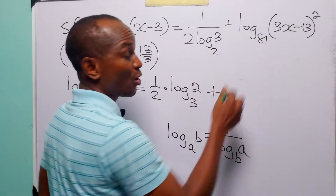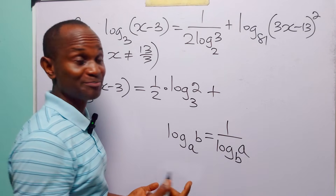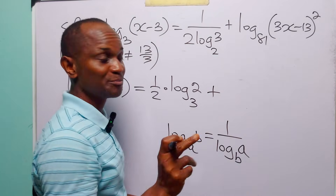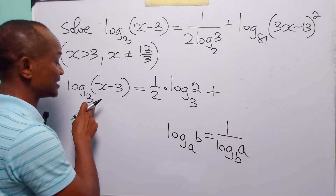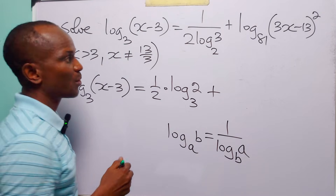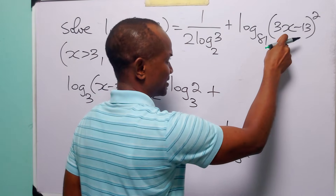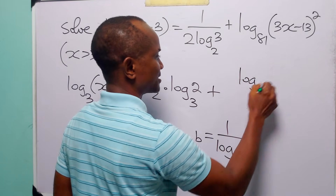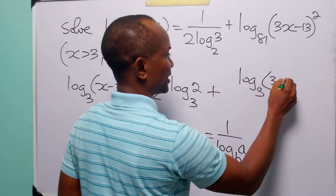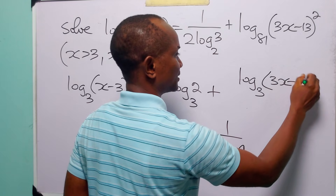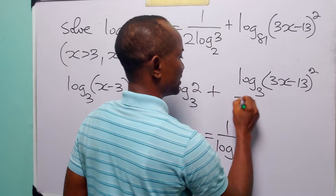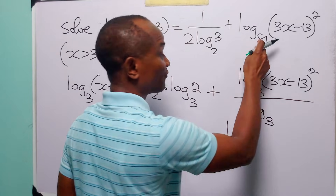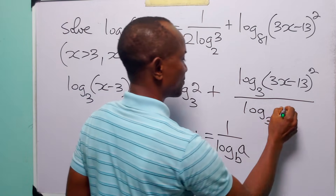Now, here what we are going to do is change the base of this logarithm from base 81 to base 3 to match the other two terms. So, when we apply the change of base formula to base 3, we have log base 3 of 3x minus 13 squared, divided by log base 3 of the old base, which is 81.